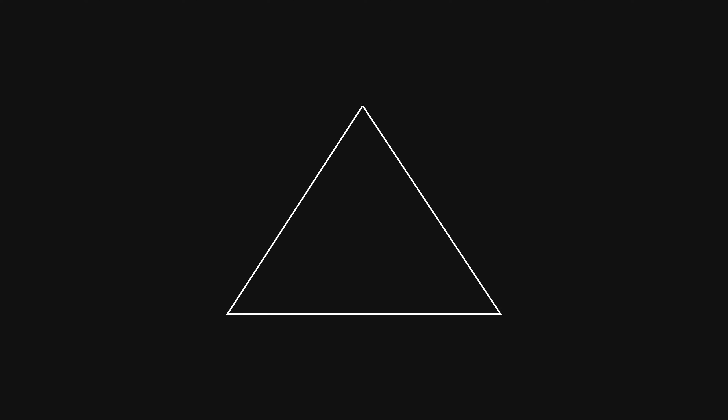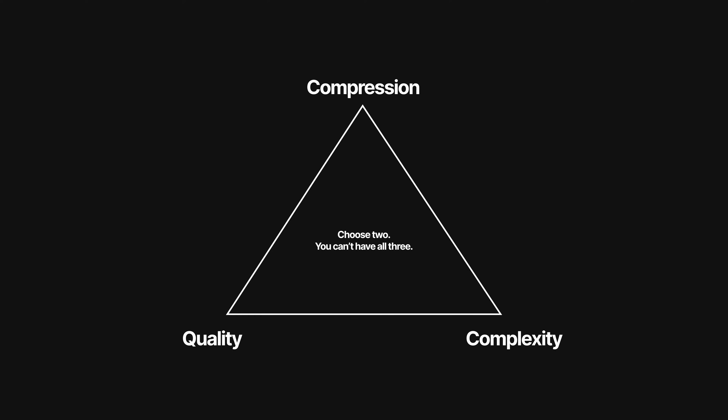So if you're into that kind of stuff, grab a beverage and stick around until the end. Every video codec can be characterized based on how well it behaves in three critical dimensions: compression, quality, and complexity. Compression means data reduction — in other words, how many bits of data are needed compared to the original image. For video files, this is your bitrate.